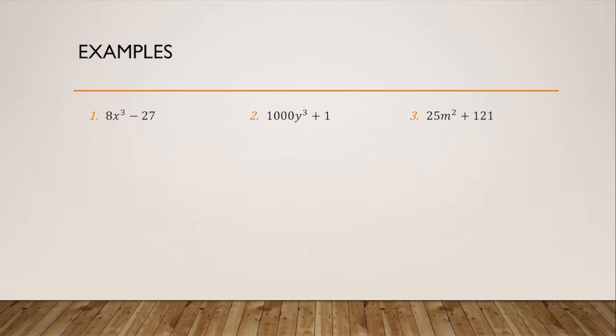I've got 8X³ minus 27. You want to start by factoring off the greatest common factor. Eight and 27 don't have a greatest common factor. This is one of the rules you did have to memorize. I've got A³ minus B³ factors into A minus B times A² plus AB plus B².